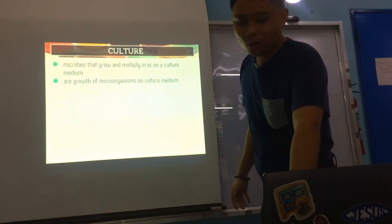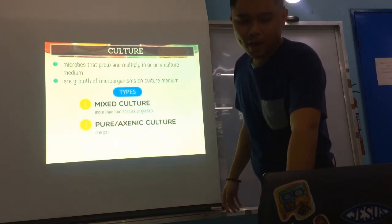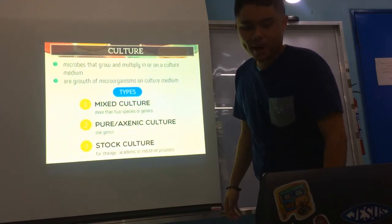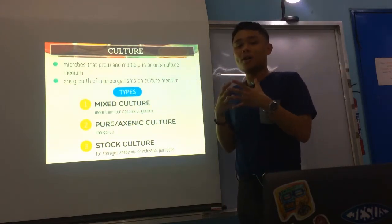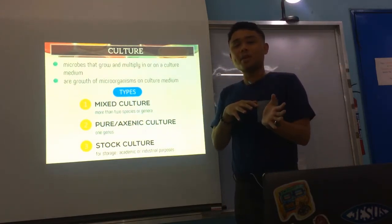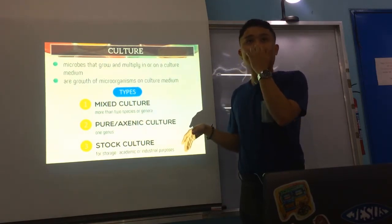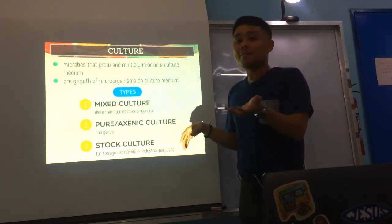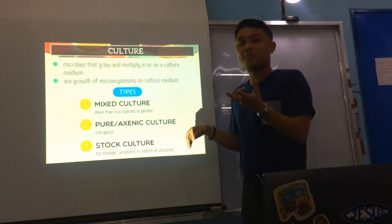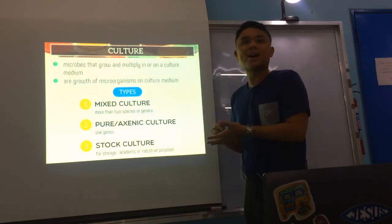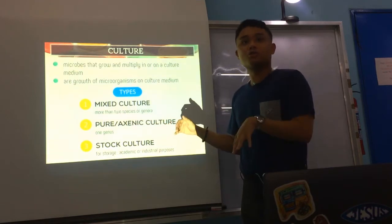Culture is the growth of microorganisms in a culture medium. We have three types of culture. First is mixed culture. When we say mixed culture — by the name itself — it's mixed. So in one culture medium, you already have two species or genera. For example, if you culture on a blood agar plate, you might have Staph aureus and Staph epidermidis, or two different genera like Staphylococcus and Streptococcus.